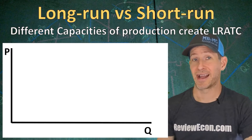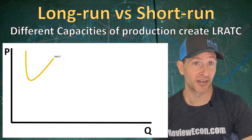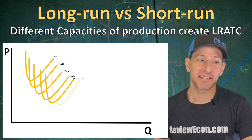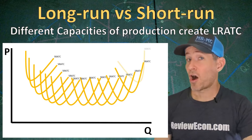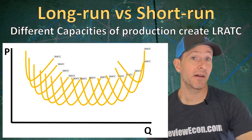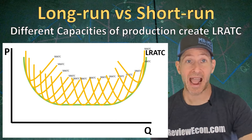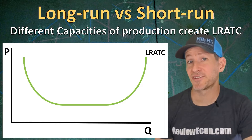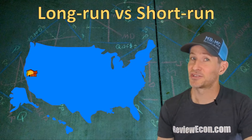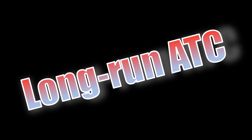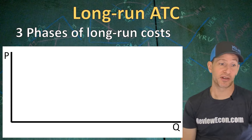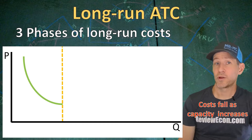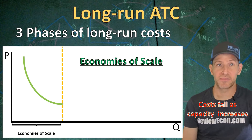Let me show you what that looks like on the graph. Here we have that taco restaurant's short run average total cost curve. As they open up more restaurants, they have new short run average costs and different capacities of production in the short run. All of these short run average total cost curves can be connected at their minimum points, and that gives us a long run average total cost curve. This long run average total cost curve shows us the minimum costs of production at different capacities — the restaurant owner moves from owning one taco restaurant to a taco restaurant empire. Now, the long run average total cost curve can have three phases of production. At low capacities of production, average costs tend to fall as capacity increases. We call this downward sloping portion economies of scale.